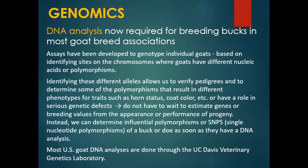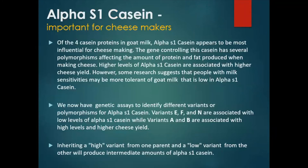Basically, as soon as they have follicle hair roots and you can pull hair from them, get a blood sample, or whatever. Most United States goat DNA analyses are done through the UC Davis Veterinary Genetics Laboratory. Besides looking at enough polymorphisms to confirm that the reported ancestry of a goat is correct, the UC Davis Veterinary Genetics Lab currently offers information on three traits in dairy goats.